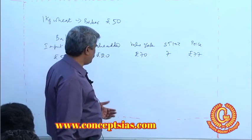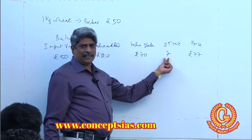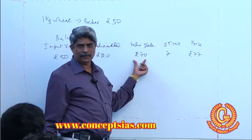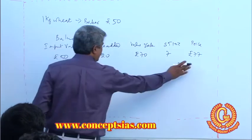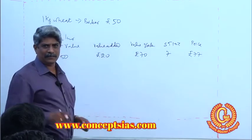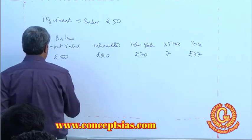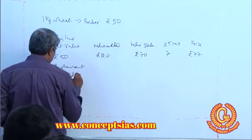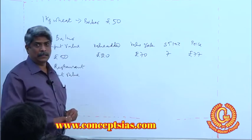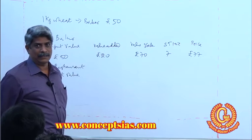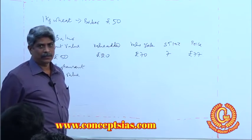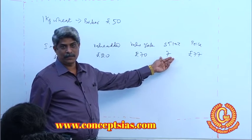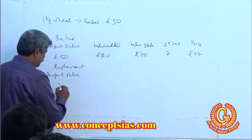So initially the tax is some percent of the total value of the product. Now this bread is bought by a restaurant. So what is the input value? Tax never gives any value, so the input value is 70.